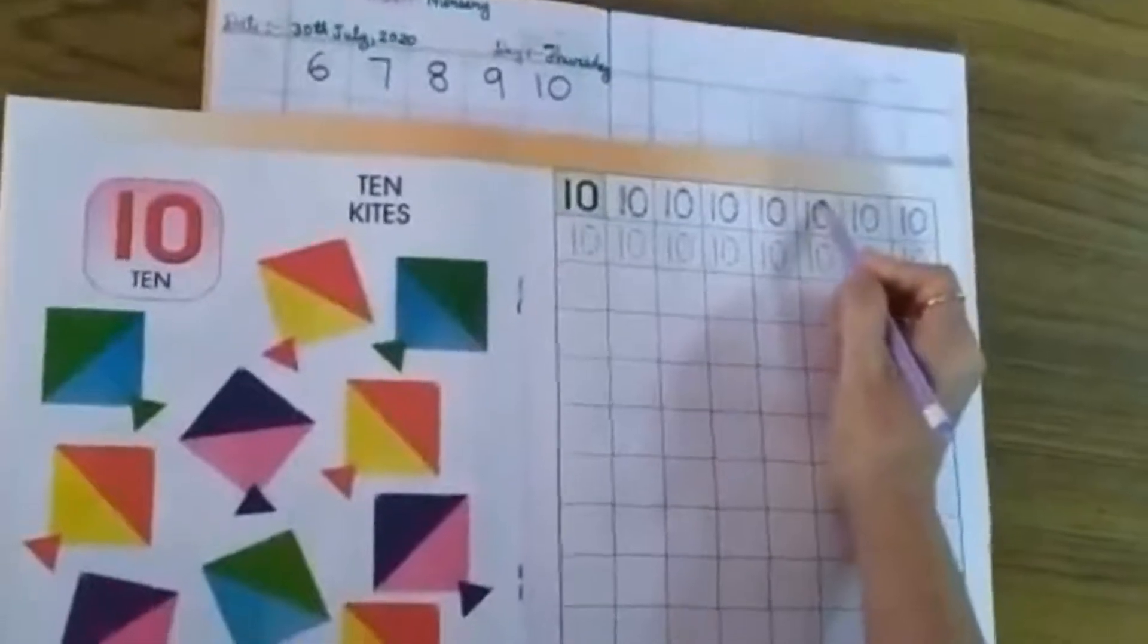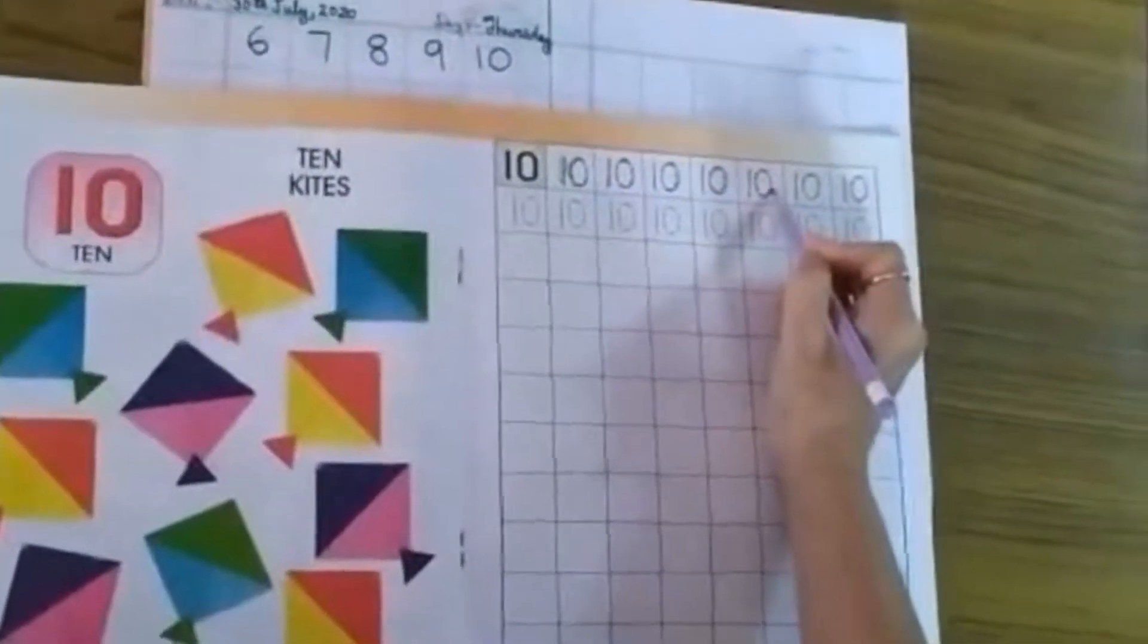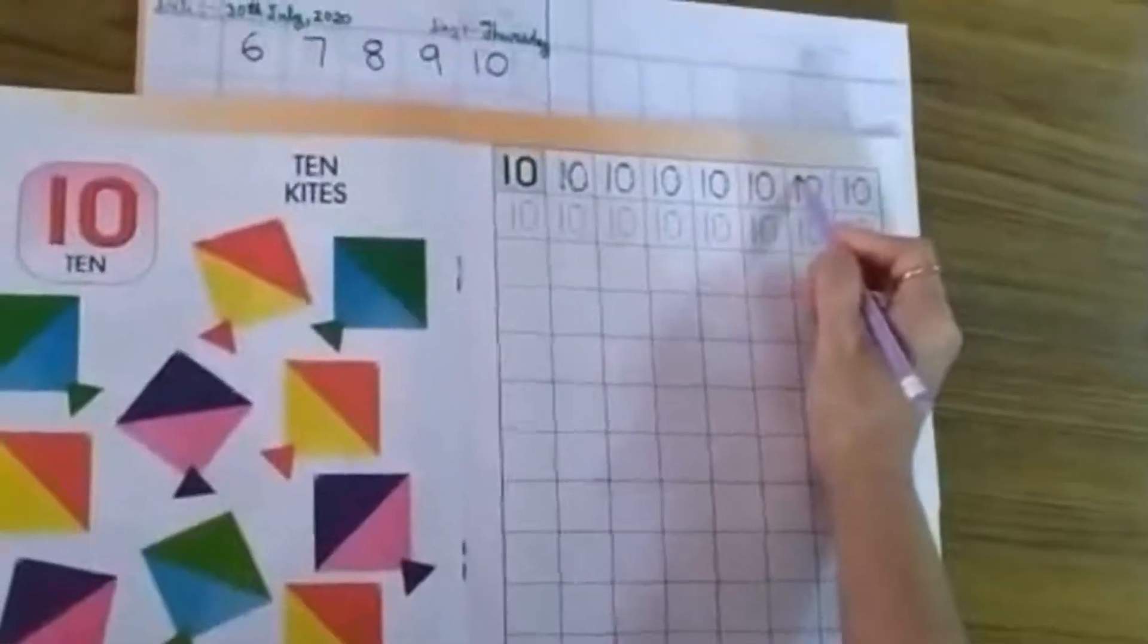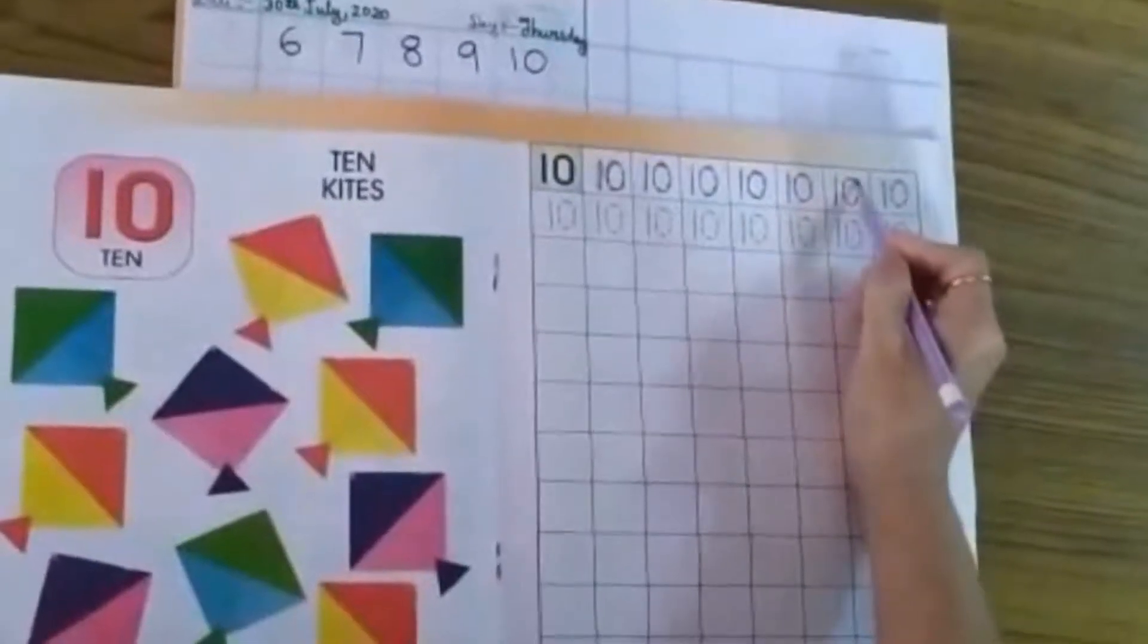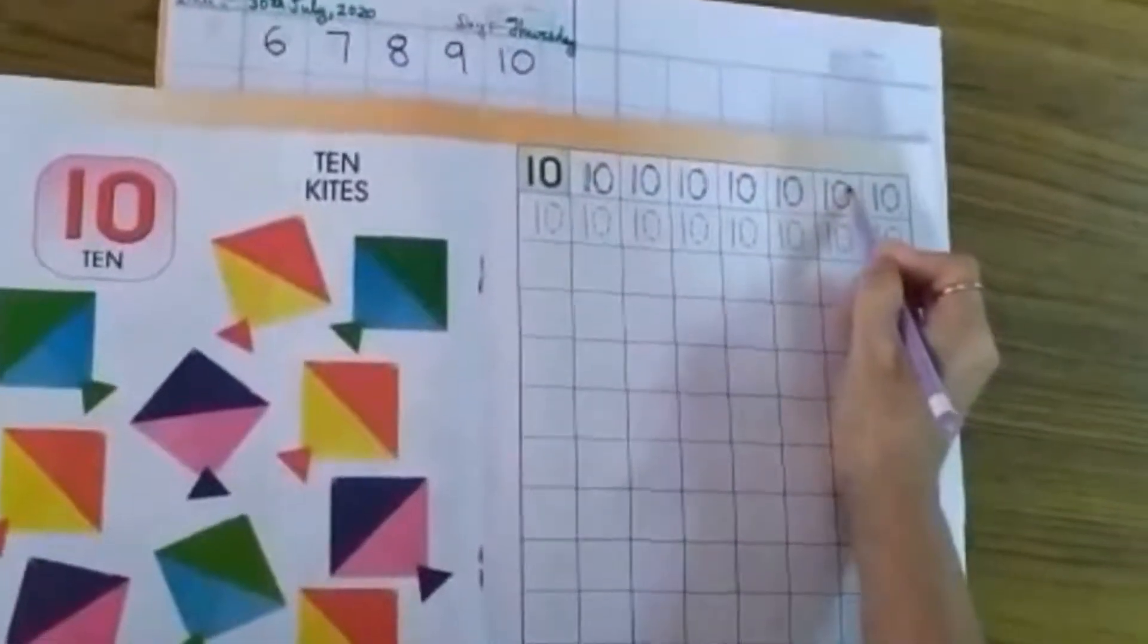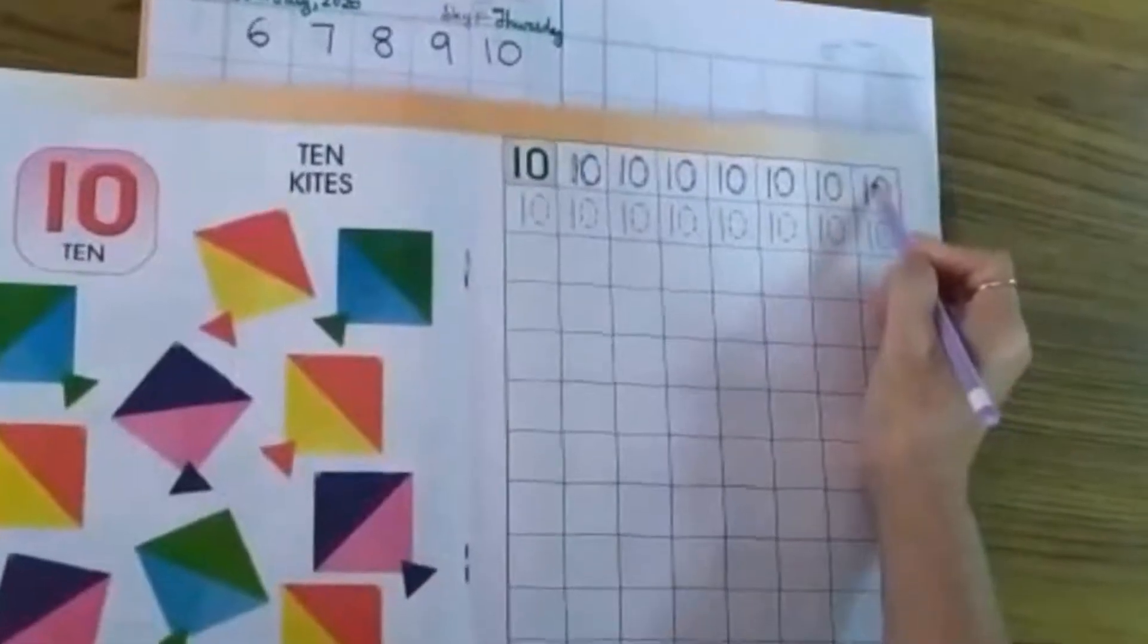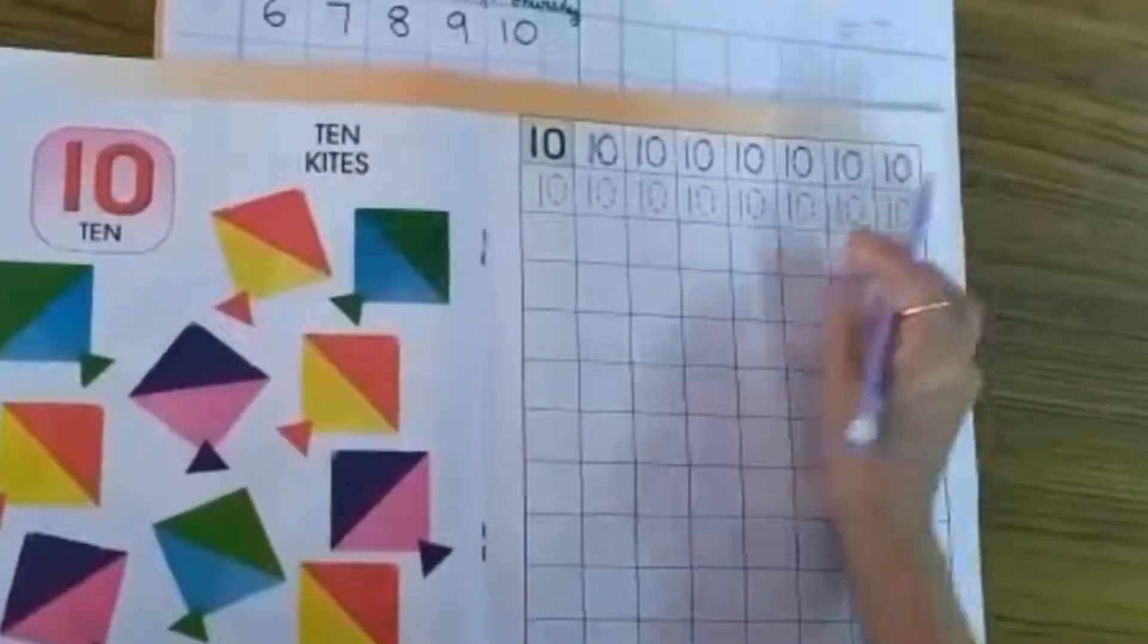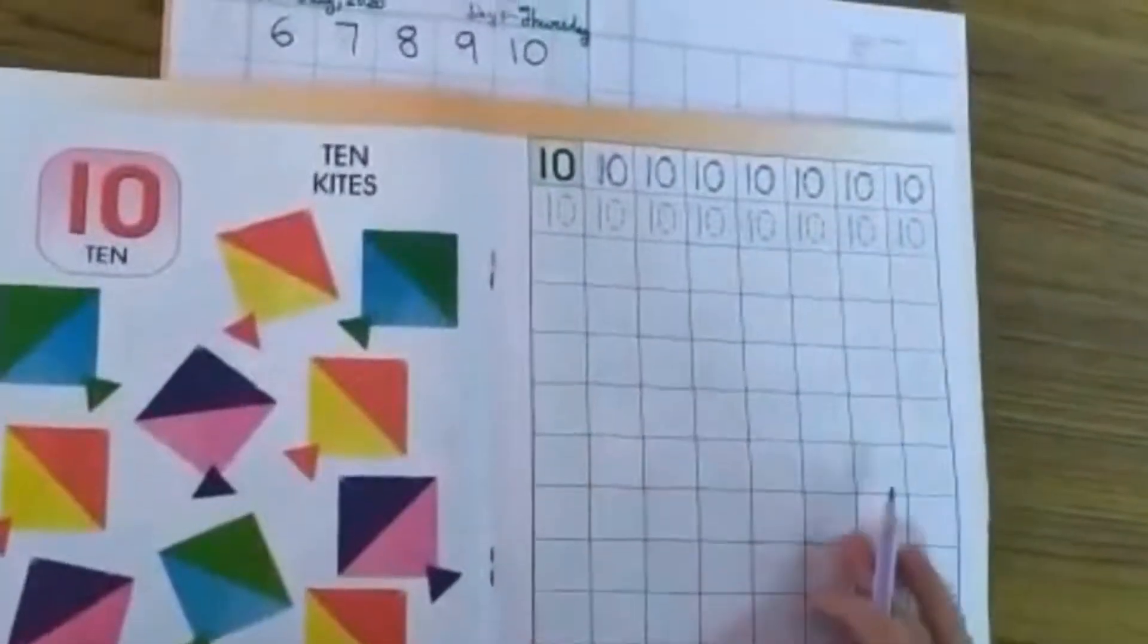Then write 1, 0, 10. 1 and 0, 10. You write 1, 0, 10 this whole page.